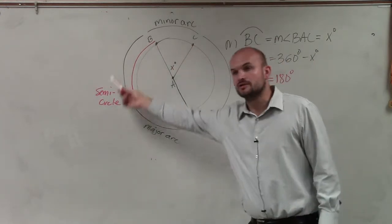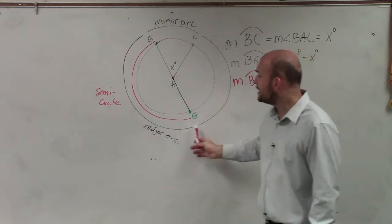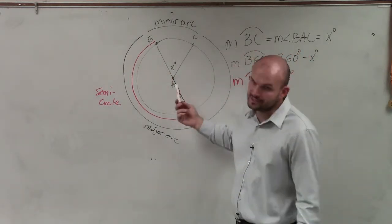To find the major arc, you're just going to take 360 and subtract it from your minor arc. And your semicircle is always going to equal 180 degrees.